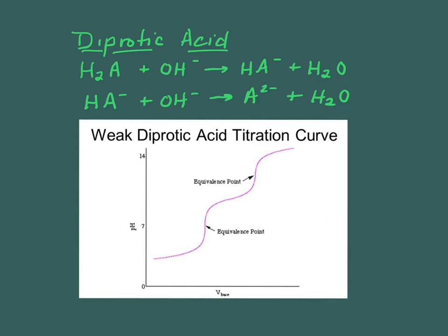Let's look at the titration of polyprotic acids. We can start with a diprotic acid. Here's the general format: H2SO3 plus OH minus. The first hydrogen ion comes off, and then you take that anion and take off the second hydrogen ion. When you look at the titration curve, note that there are two equivalence points — one for each reaction. This first one shows the first hydrogen ion coming off, and this shows where the second hydrogen ion is coming off.